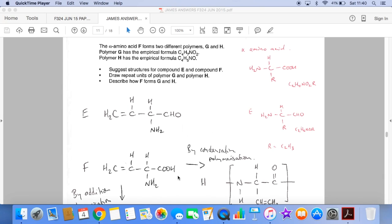Time for the polymers now. So we're told polymer G has empirical formula C4H7NO2 and H has the empirical formula C4H5NO. So what I'm going to do is count up the atoms in F.